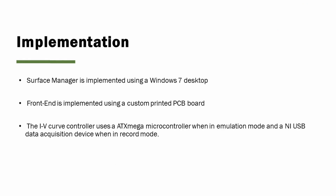The prototype is implemented as follows. The surface manager runs on a 64-bit Windows 7 desktop. The front end uses a custom-printed PCB board powered by a 9-volt DC source, providing filtering and amplification for measurements. The IV curve controller uses an ATX Mega microcontroller in emulation mode and a NI-USB data acquisition device in record mode. The total system cost is around $700. Software for recording, processing, and emulating energy environments was written in a combination of Python, C, and C++. The smart load is implemented using an Arduino Uno microcontroller to control a digital potentiometer.